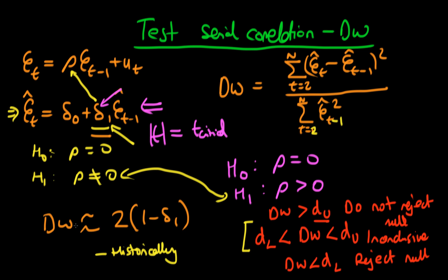By contrast, we can derive exact sampling distributions for the Durbin-Watson statistic. So even in finite samples, we can actually conduct inference without using any sort of approximations. So that's one of the benefits of the Durbin-Watson statistic over the t-test.